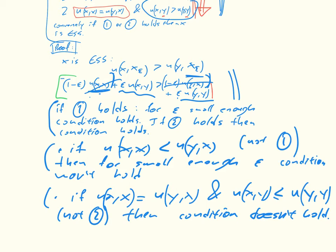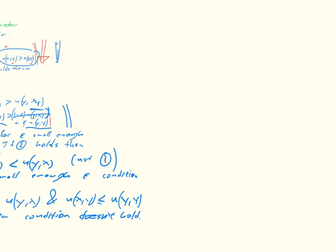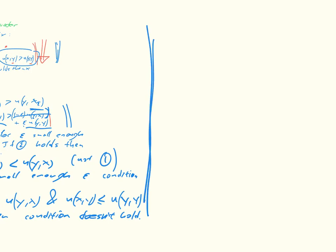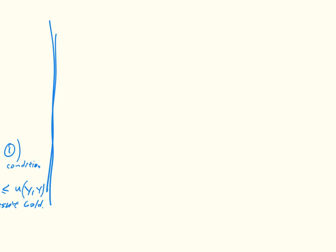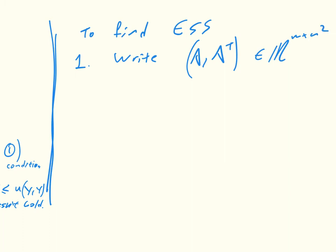So what's nice about this proof is that it actually gives us a nice efficient way of calculating whether or not a strategy is an ESS. And you'll note that at no point did we actually use the epsilons, which is very nice. So we have this kind of condition to find ESS. We write down A belonging to R^(n×n). So we write down the normal form game,